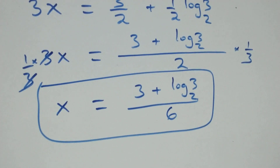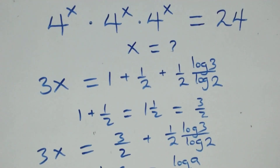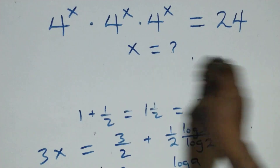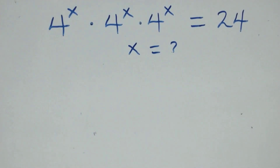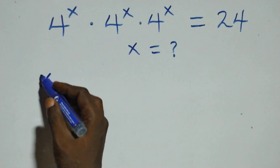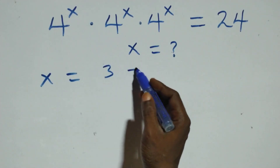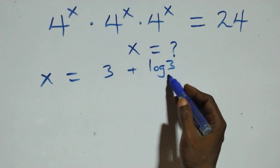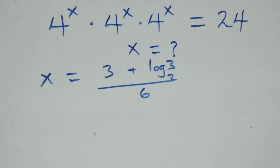Now let's check if this satisfies the given problem. The value of x is x equals 3 plus log₂3, all over 6. We will substitute this back to verify the solution.